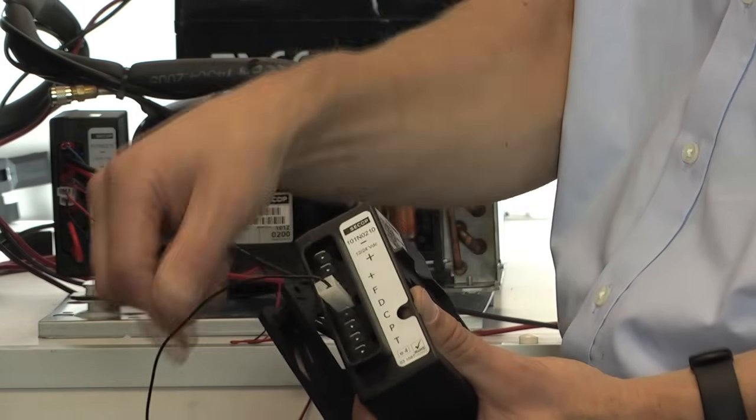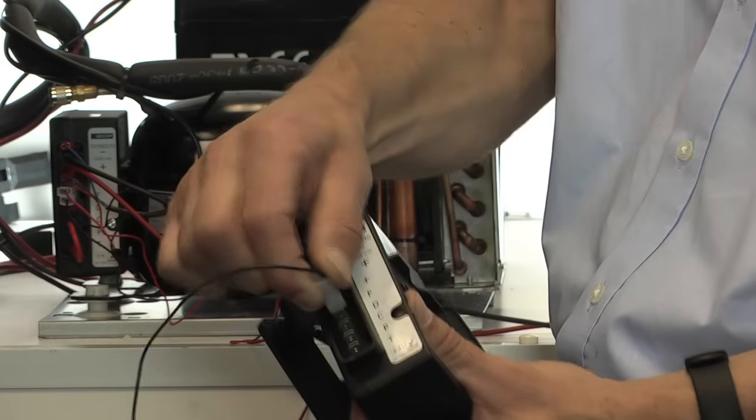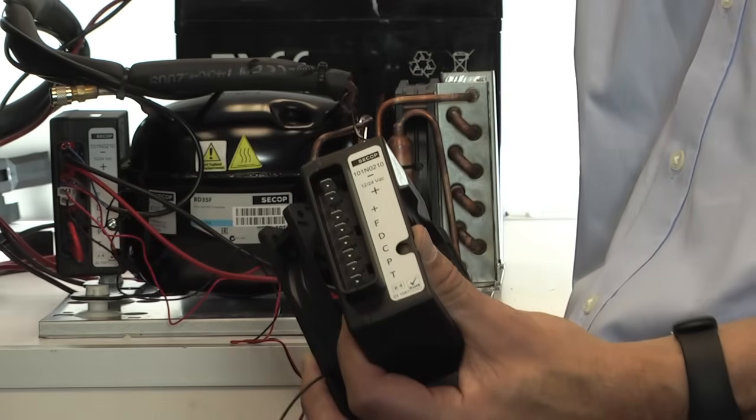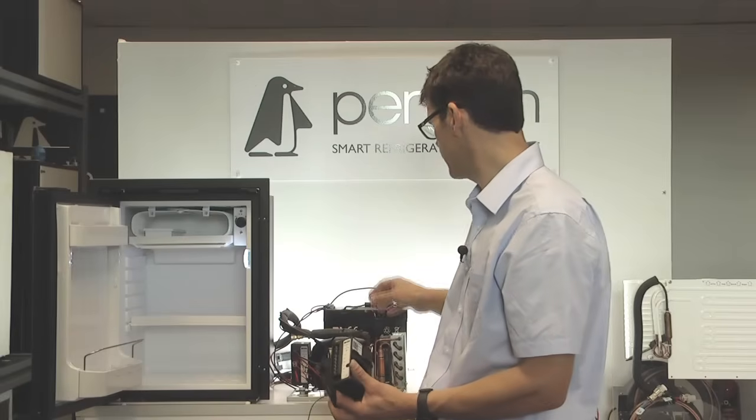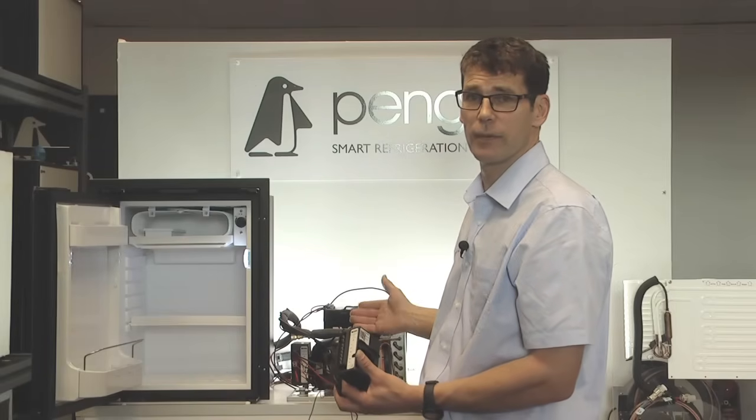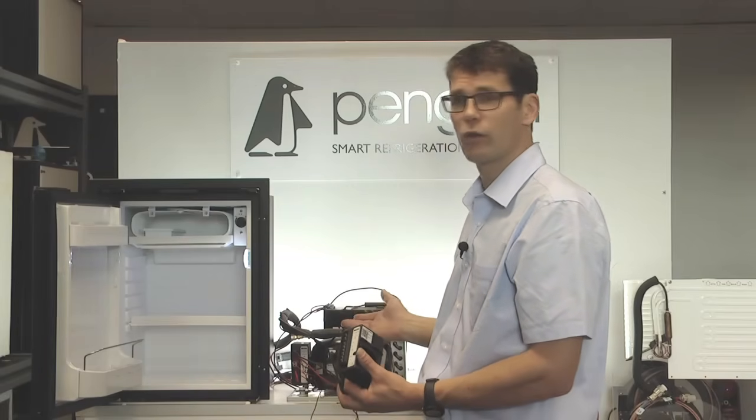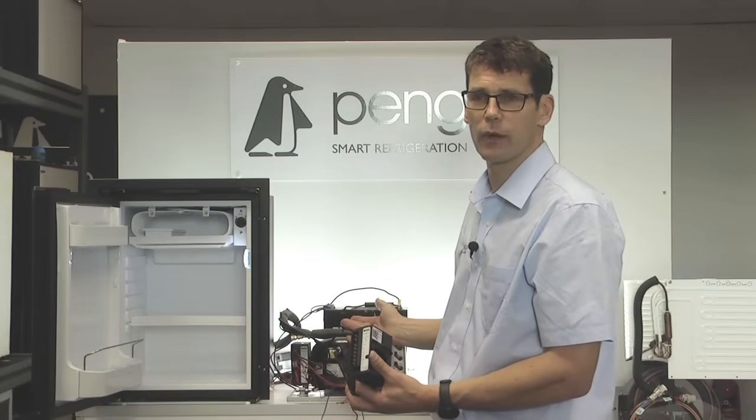If we disconnect one or both of those, the compressor starts, we know that the problem is the fan. It's then a question of removing the fan, confirming the size, and then you can order a replacement online at our website, www.penguinfrigo.co.uk.